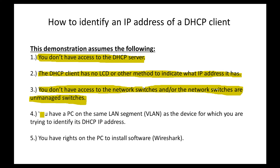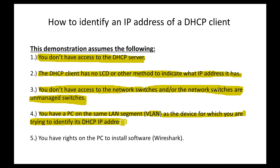Assumption number four: you have a PC in the same LAN segment, a.k.a. VLAN, as the device for which you're trying to identify its DHCP IP address. This is really critical because the technique we're going to use is sniffing the wire via Wireshark, specifically analyzing the broadcast packets. The PC needs to be on the same VLAN as the device. Finally, you need rights on the PC to install software, specifically Wireshark.